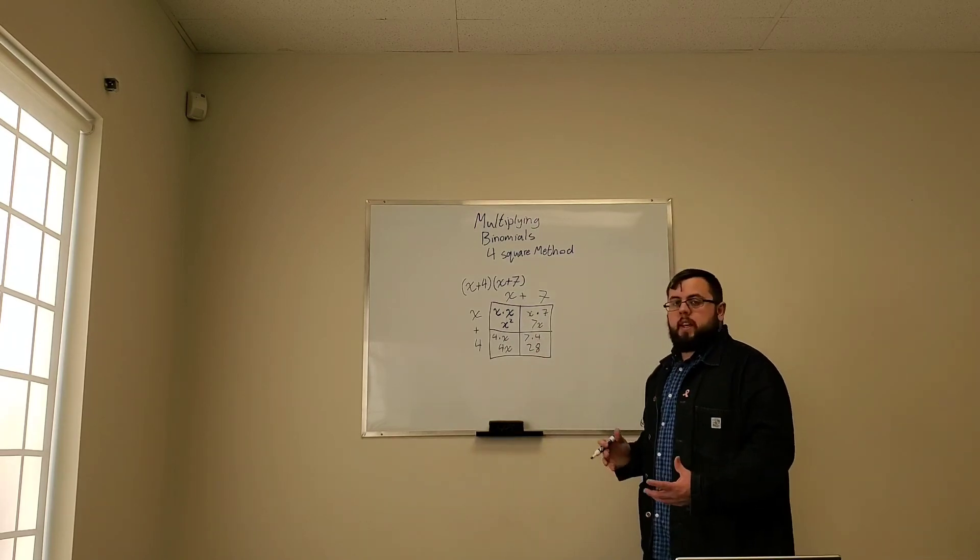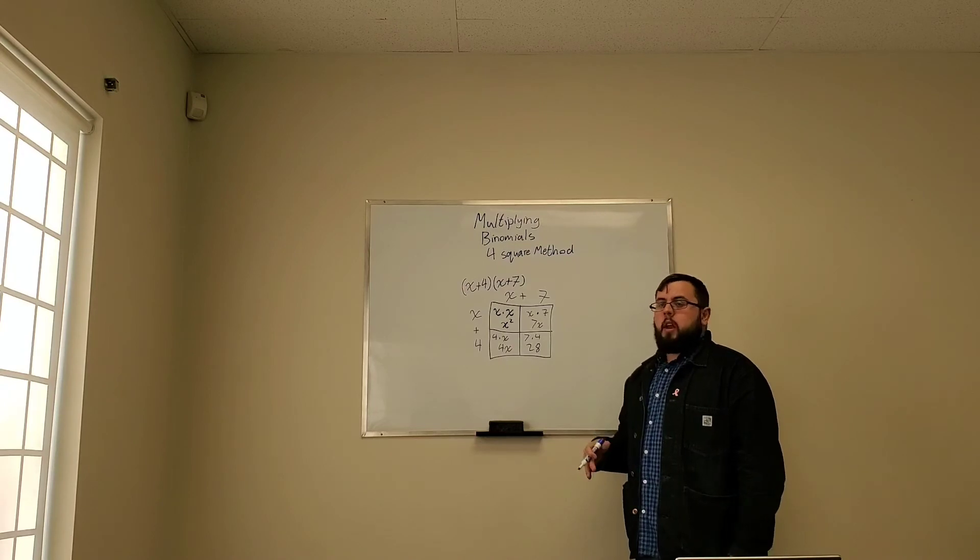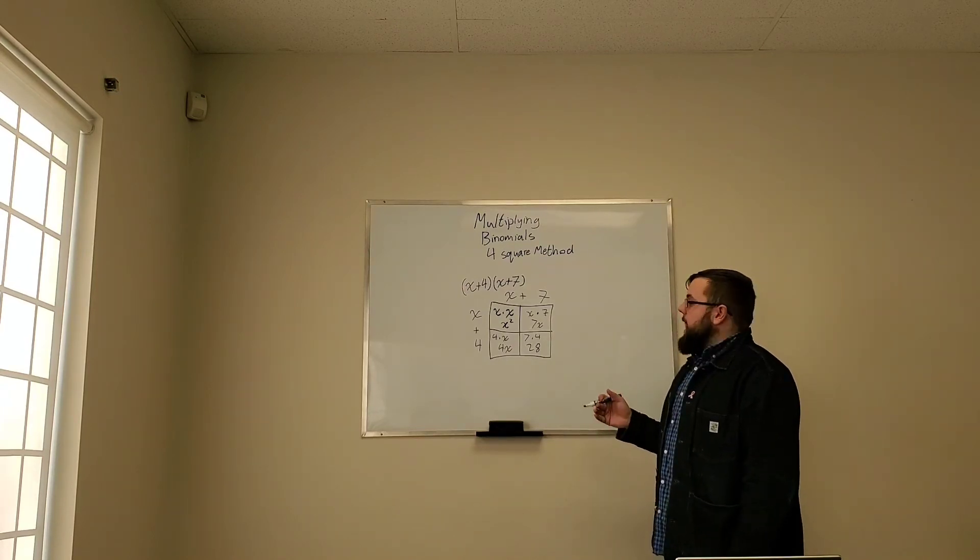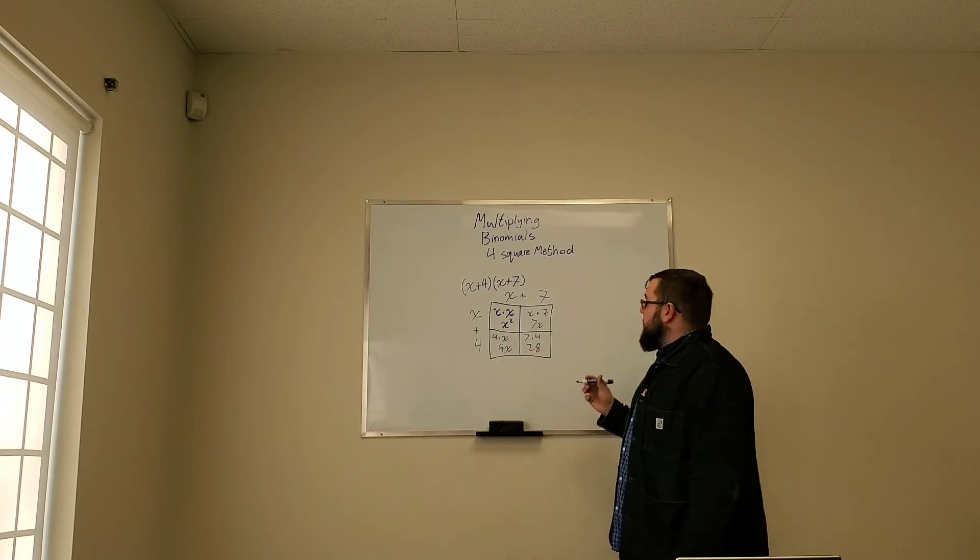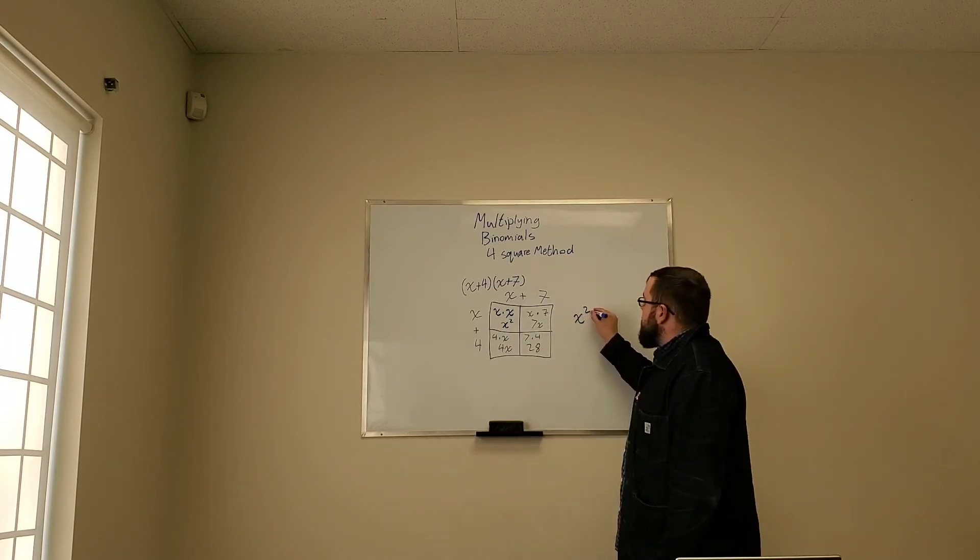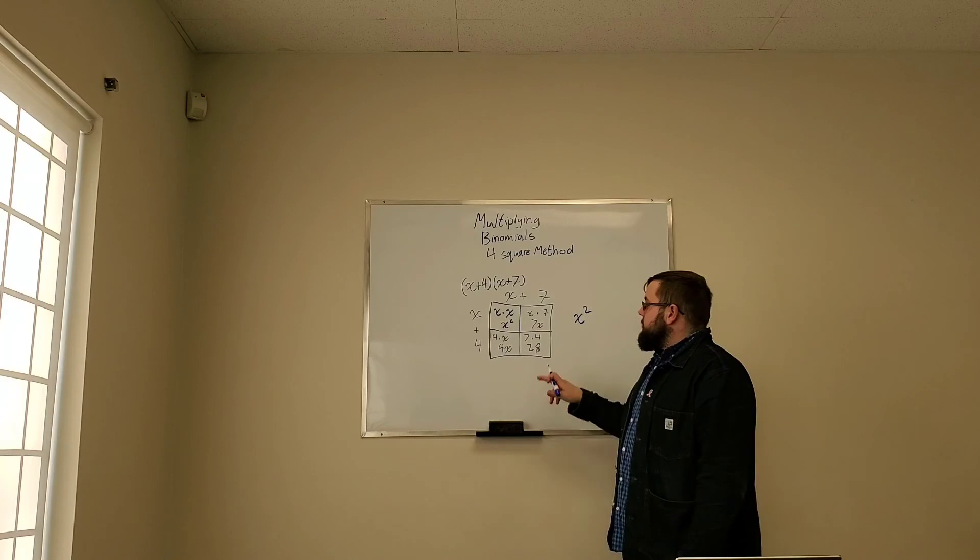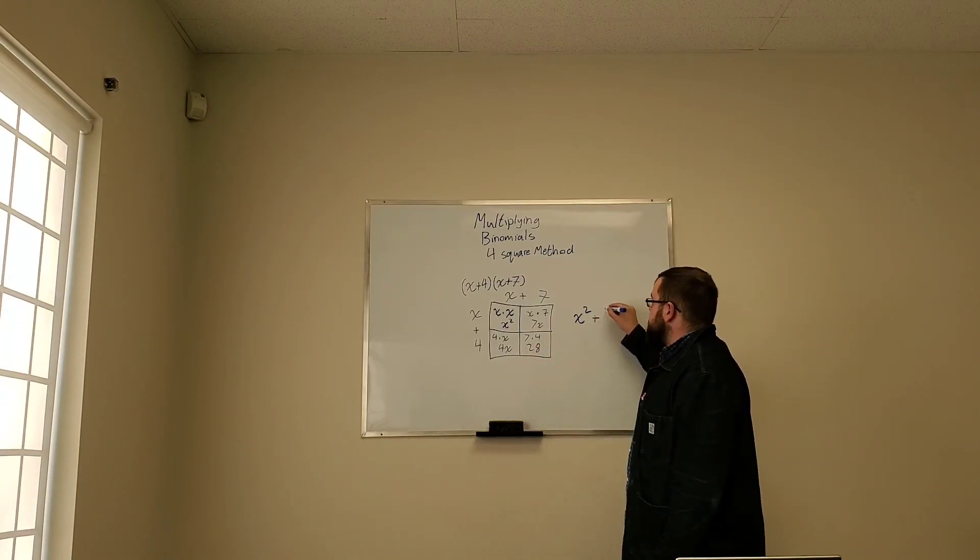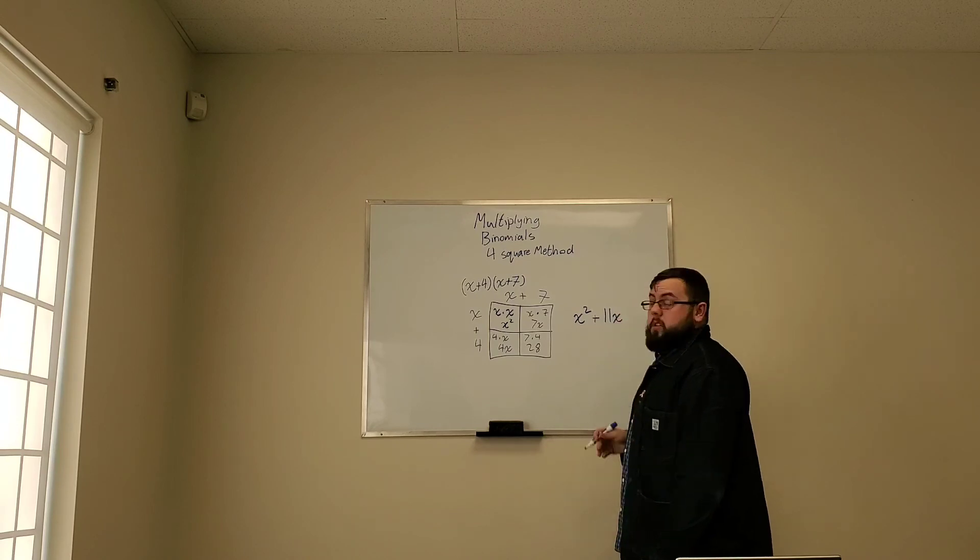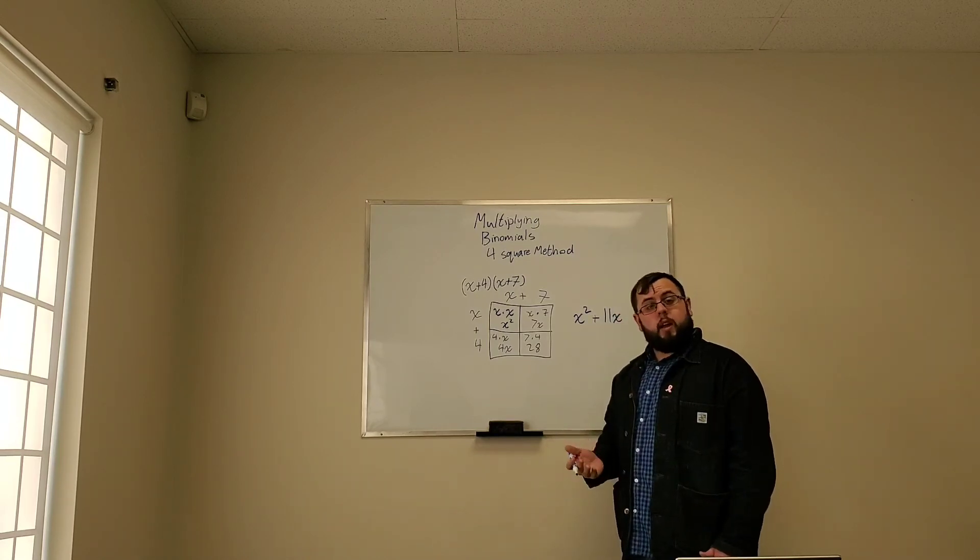So we have all of the pieces inside our four-square. And all we have to do now is gather our like terms. So we look and we see x squared. There's nothing else to gather with it. 7x and 4x are similar terms. So we can add those together. 7 plus 4 is 11.